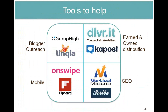A few tools to help: if you're looking to distribute or do blogger outreach, look at Group High — it's essentially a search engine for bloggers. Linkia lets you set up a campaign and target specific social and blogging communities. Look at OnSwipe or Flipboard to transform your content into a nice mobile experience. Vertical Measures is great for SEO, or Scribe — built right inside WordPress. And my company Deliver.it, if you're looking to combine all of those into one.